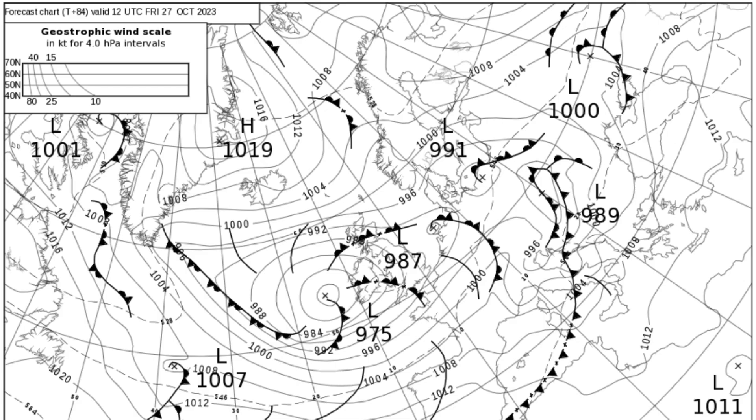We can use this Geostrophic Wind scale to work out how windy it will be at any location on the map. Let's say we're going to pass south of Portland Bill and we want to predict the wind that will be present when we get there. Conveniently we'll be passing at the exact time this chart is valid for, and the first thing to note is our latitude, which in this case is almost exactly 50 degrees north.